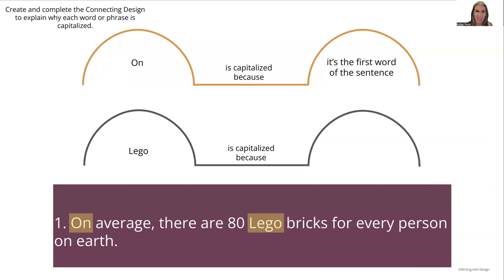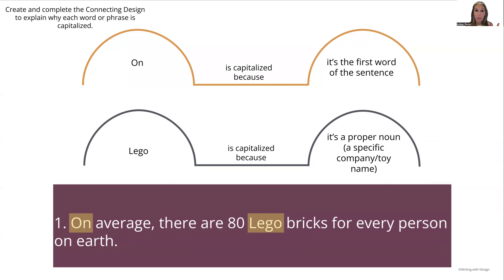Then the second word: 'Lego is capitalized because...' It's easy to say 'it's a proper noun,' but let's have students go a little further — what type of proper noun is it? You can give them a chart with all the different categories of proper nouns. In this case, it's a specific company name, and specifically a toy company and the name of the toy it makes. We've gotten very specific here about the rules prompting these two words to be capitalized, getting students to start to internalize why words in sentences are capitalized.